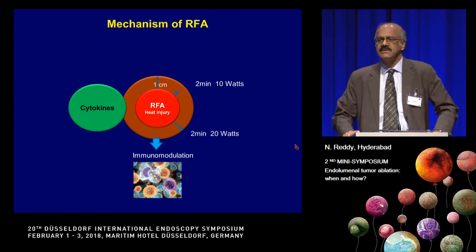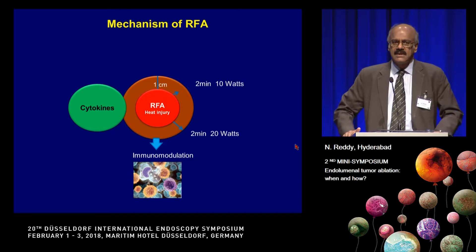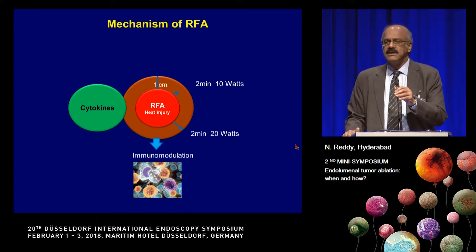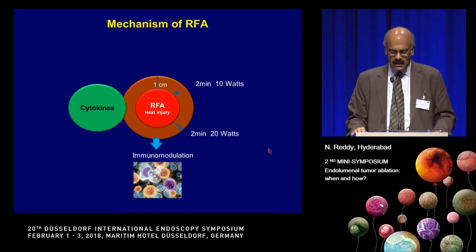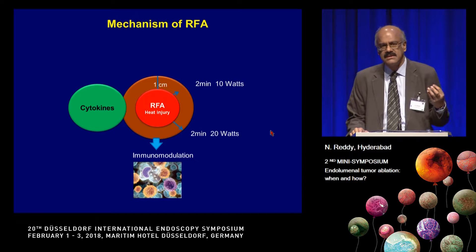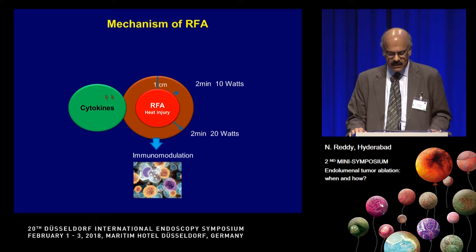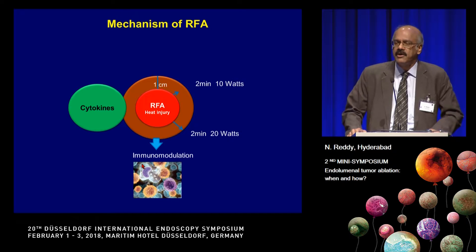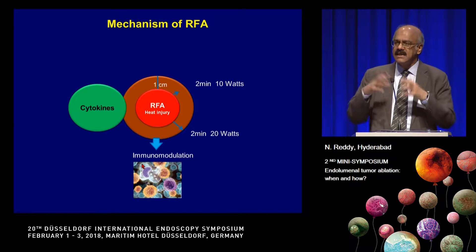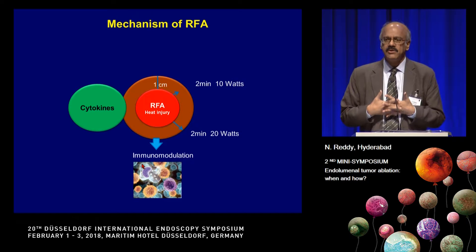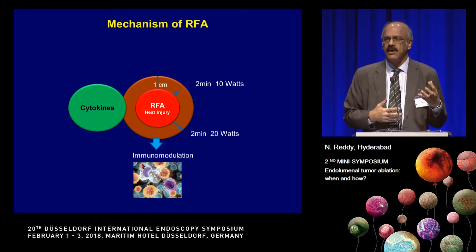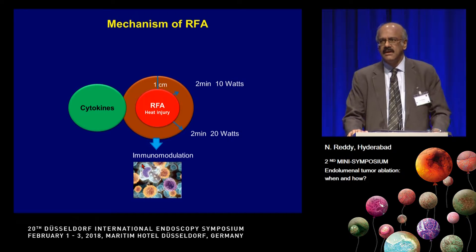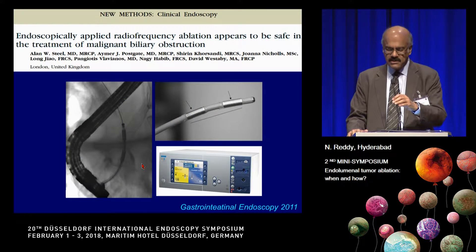The second method is radiofrequency ablation. Most of the data come from the hepatology literature. RFA has been used extensively in hepatomas, and it has been shown that for tumors less than three centimeters in size it is as good as surgical removal — not only because it ablates the tumor, but because of cytokine release and immunomodulation, a much larger amount of tumor is destroyed. For this reason it has been used extensively by hepatologists, urologists for renal tumors, and pulmonologists for lung tumors, and now to a limited extent in cholangiocarcinoma.